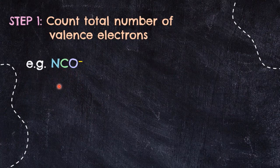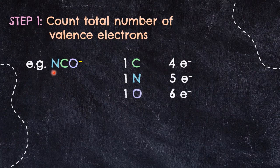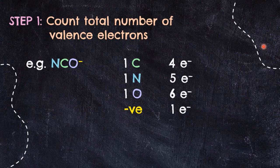From the group, we know carbon has 4 valence electrons, nitrogen has 5 valence electrons, and oxygen has 6 valence electrons. If you have a subscript in your molecule, don't forget to multiply the electrons by that number. Since we have only 1 nitrogen, 1 carbon, and 1 oxygen, we don't need to multiply. Another source of electrons in this example is the negative charge — a negative charge means an electron is added, so we add 1 electron due to the −1 charge.